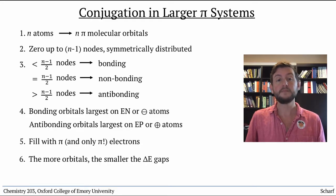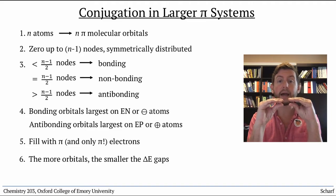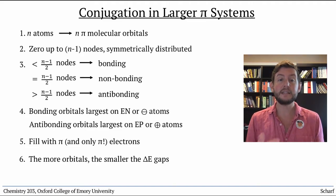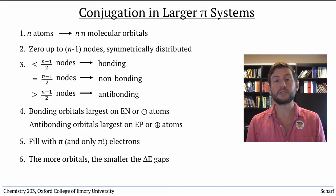Number six, the energy gaps between molecular orbitals shrink the more atoms are present. That is, the orbitals get more closely spaced. This has implications for spectroscopy.